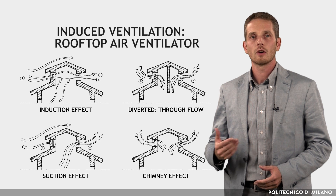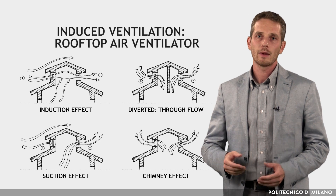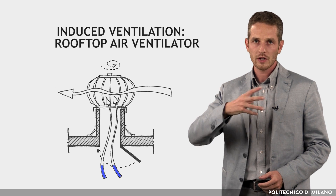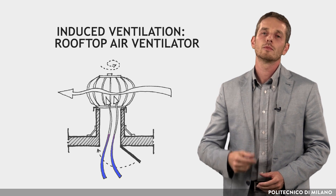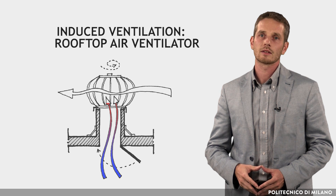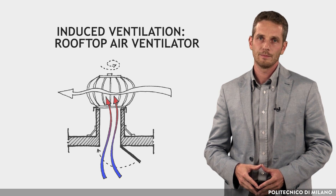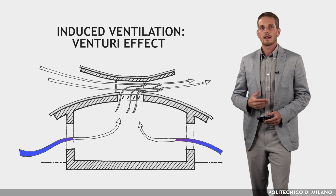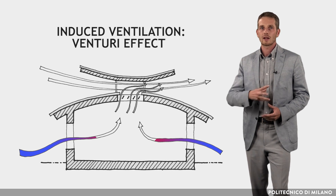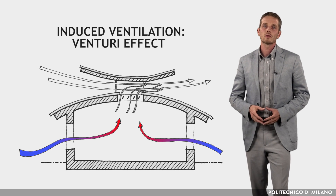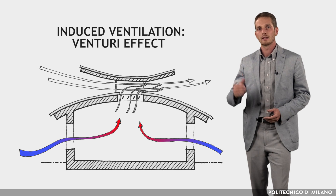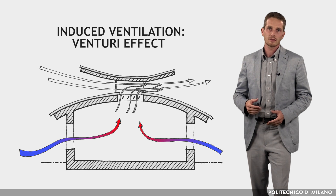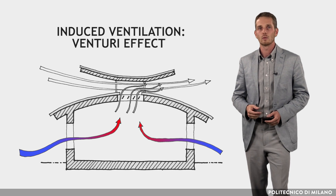The second way exploits wind velocity either by channeling the airflow inside or by creating depression with a rotating device moved by wind to extract air from the building. The third way exploits the venturi effect, where air is extracted from the building because of the low pressure created by the wind on top of a shaft. In windy areas it could be an effective alternative to wind catchers.